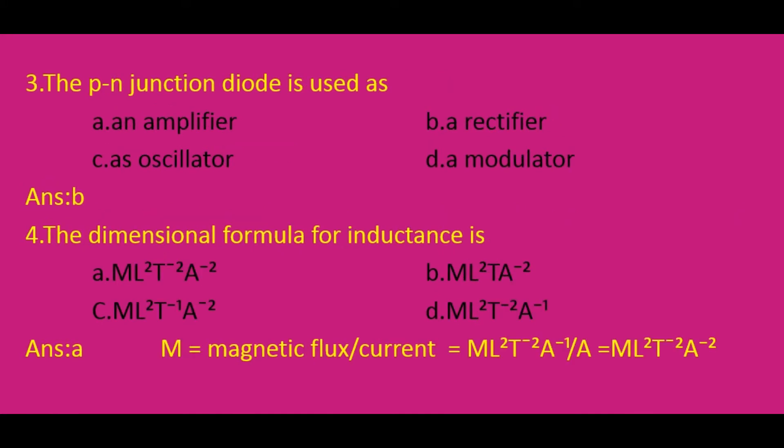The PN junction diode is used as a rectifier — that is option B. A rectifier is a device used to convert alternating voltage or alternating current into direct voltage or direct current. The junction diode has the property of offering low resistance and allowing current to flow through it in the forward biased condition. This property is used in the process of rectification. So the correct option is B.